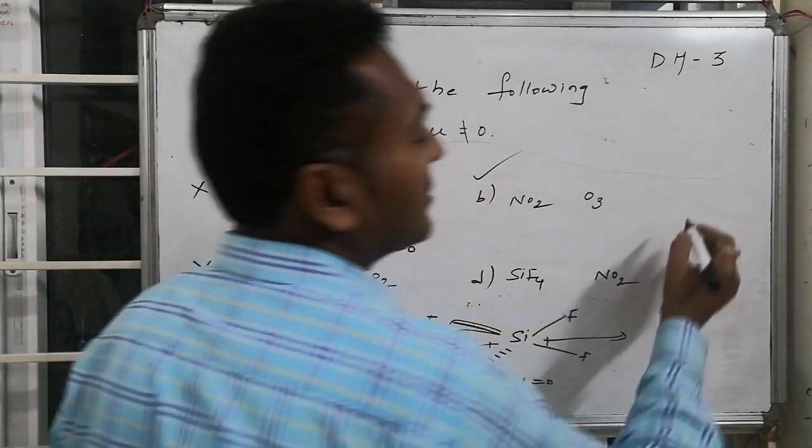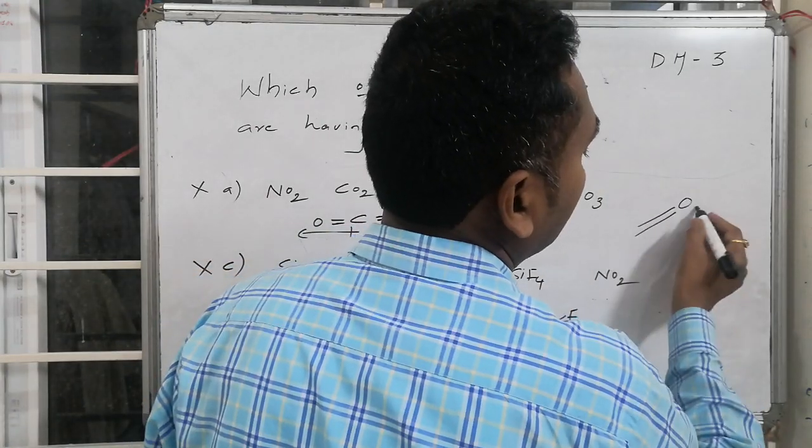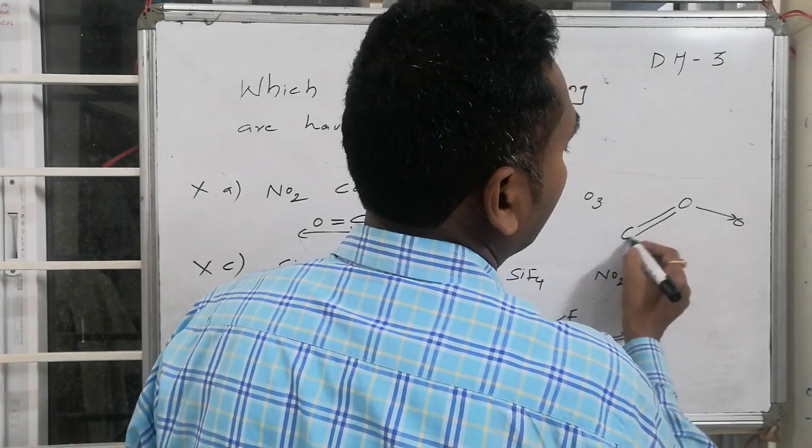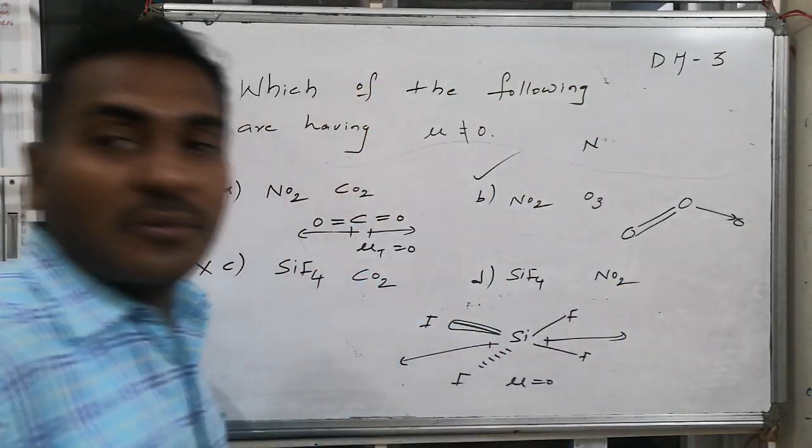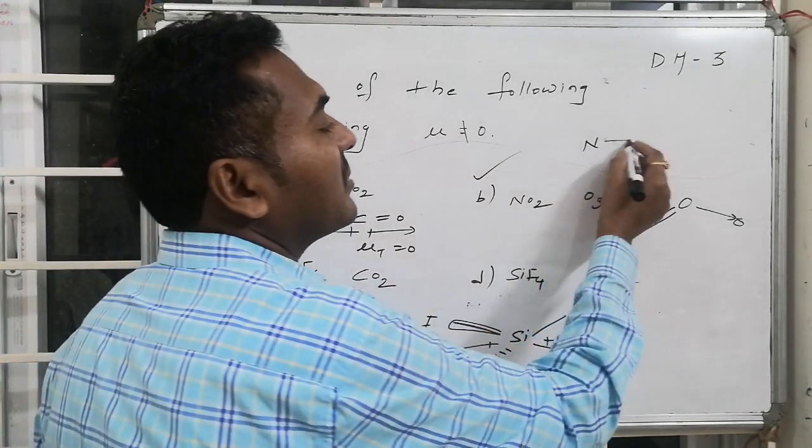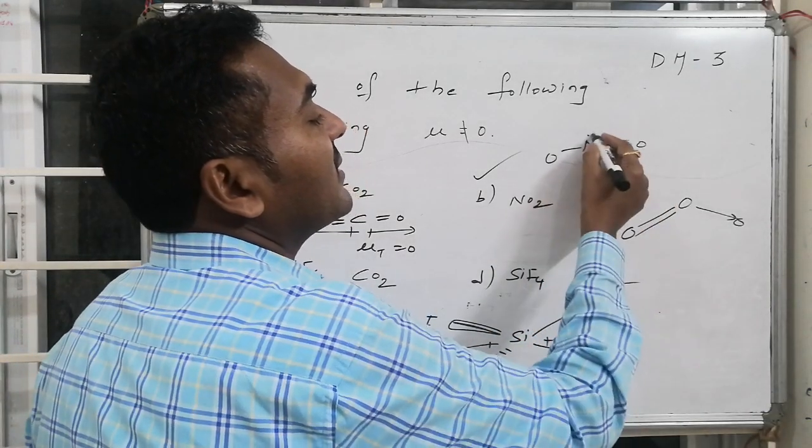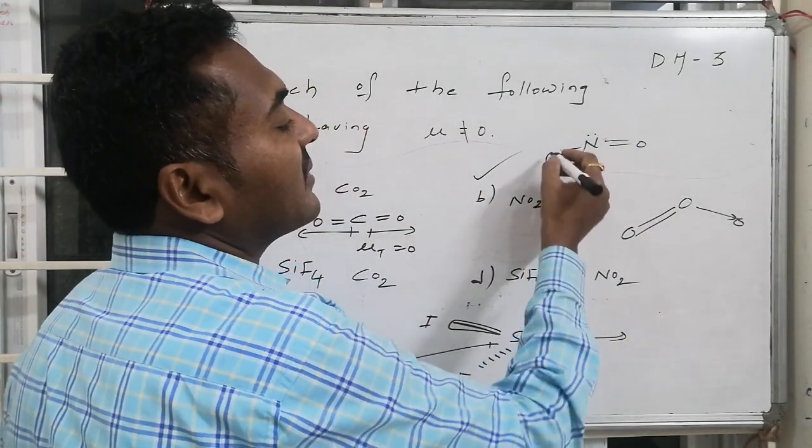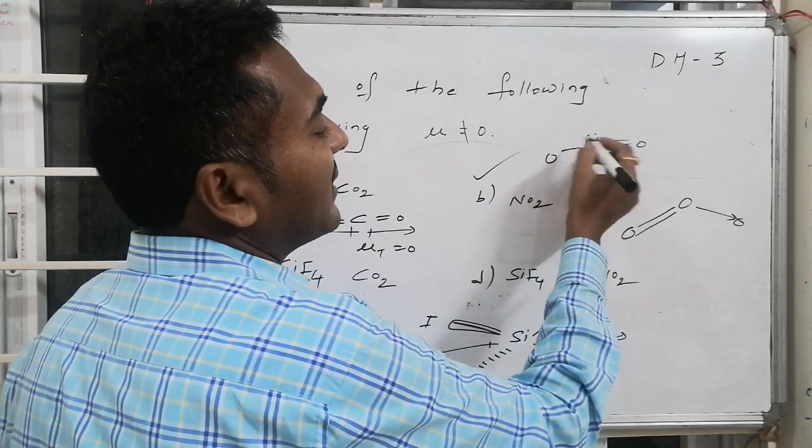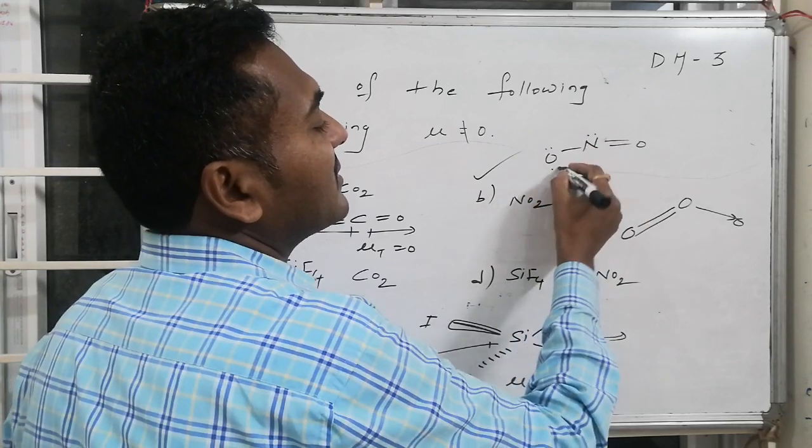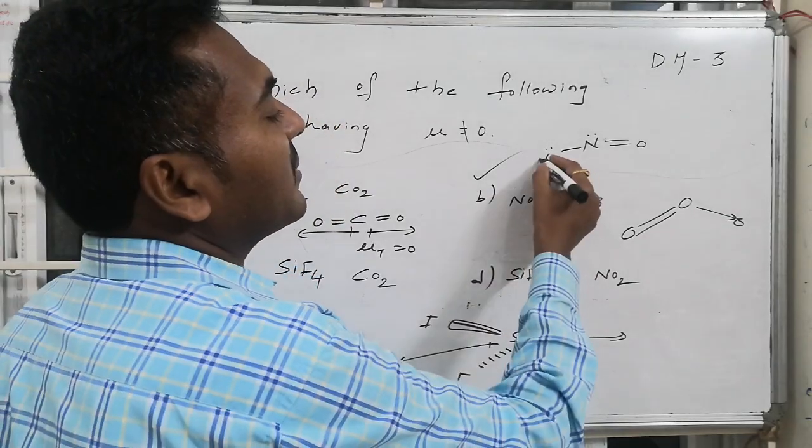In this option, ozone is a resonance hybrid of multiple structures, and NO₂ appears with double bond O, followed by O with a lone pair.